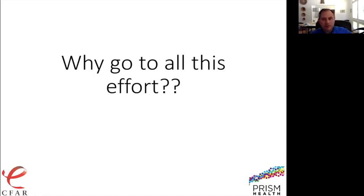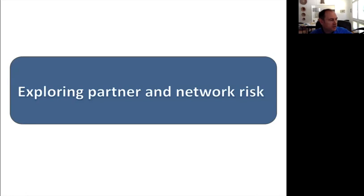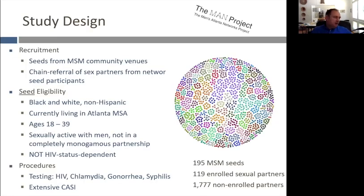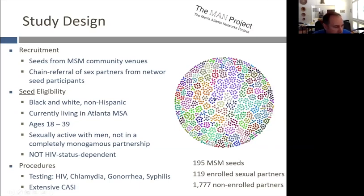We go to all this effort because we want to understand these networks and how they convey risk. Eli also helped lead the MAN project — a study where we recruited seed MSM and asked them to refer us to their sex partners, then invited those partners to come in and describe these networks. This diagram shows each network of MSM — some networks had just the seed and one partner, perhaps a monogamous relationship; others had quite large networks where seeds referred several partners and each of those referred more.